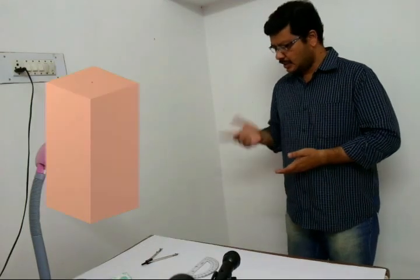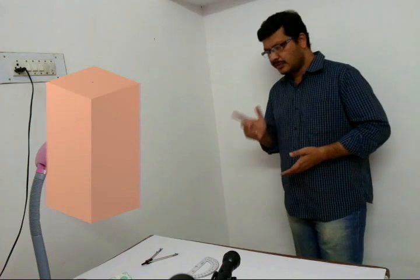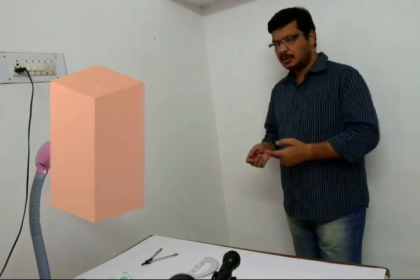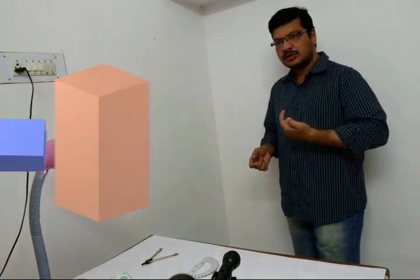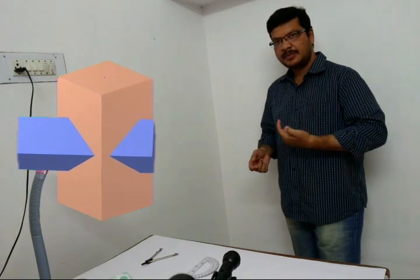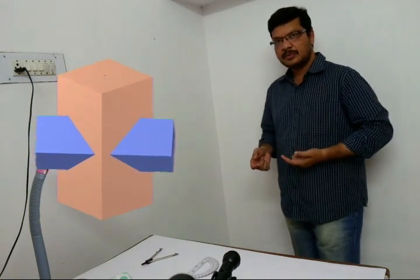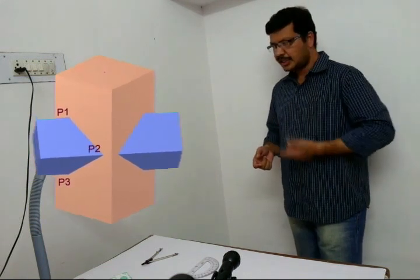Now, observe this case. This is the vertical square prism. The horizontal square prism is interconnected into the vertical square prism as shown here.